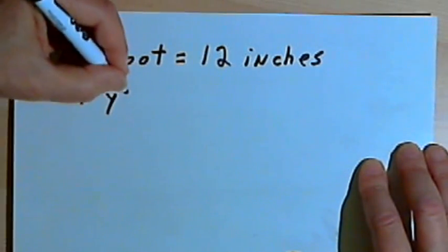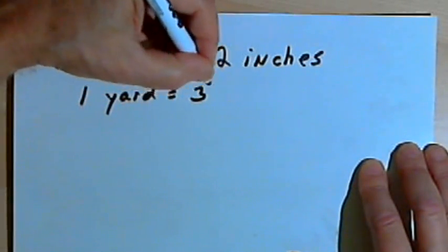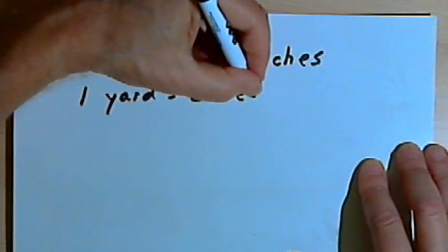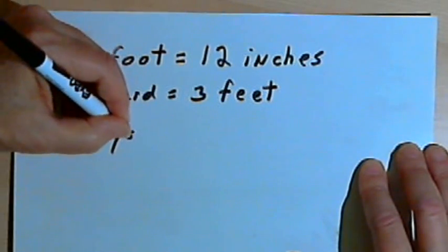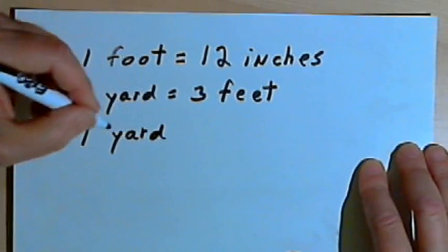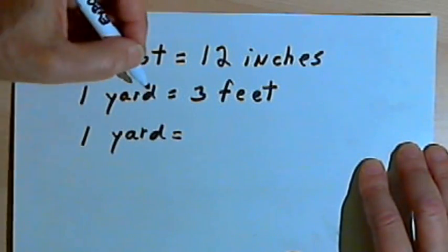One yard is equal to 3 feet. Now very often yards are expressed in terms of inches, so we can find what one yard equals in inches. We can do it this way.